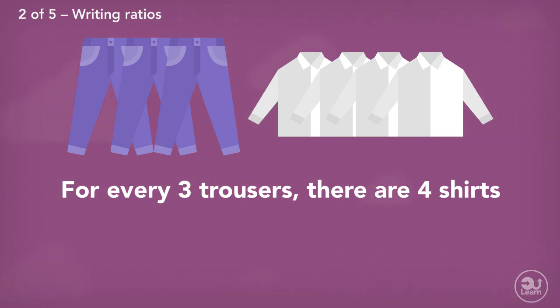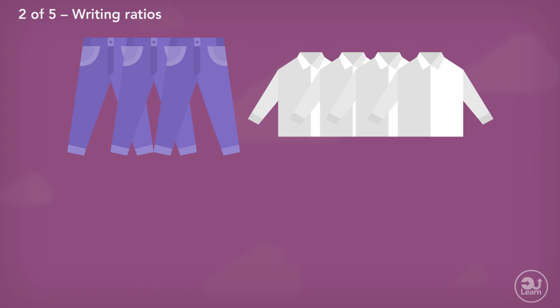As an alternative, we can just use the ratio notation: three followed by a colon and a four. This is the ratio of the relationship between my trousers and shirts.